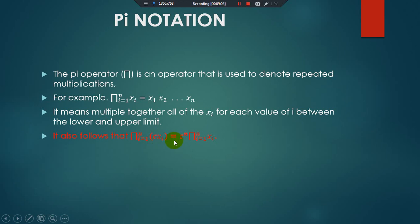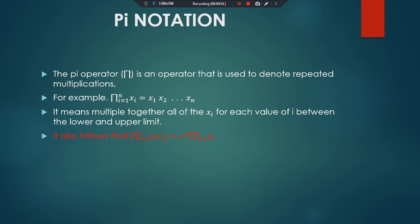It also follows that if we have a constant in the pi notation — pi from i=1 to n of c times x_i — we give the constant a separate power equal to the upper limit n. So this becomes c^n times pi from i=1 to n of x_i. In this video we have discussed sigma notation, its properties, and pi notation. See you in the next video!